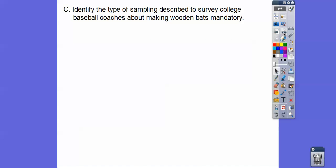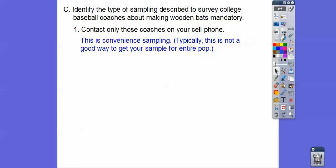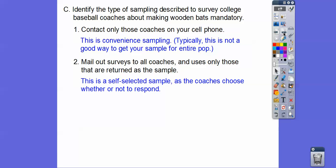Identify the type of sampling described to survey college baseball coaches about making wooden bats mandatory. Contact only those coaches that are on your cell phone. What kind of sampling is that? That's convenience sampling because typically it's not a good way to get a sample of your entire population, and that's convenient because you're only using the ones that you have nice and convenient in your cell phone. How about mail out surveys to all the coaches and use those that are returned as the sample? Those that are being returned are the ones that are volunteering, so that would be a self-selected sample as the coaches choose whether or not to respond.